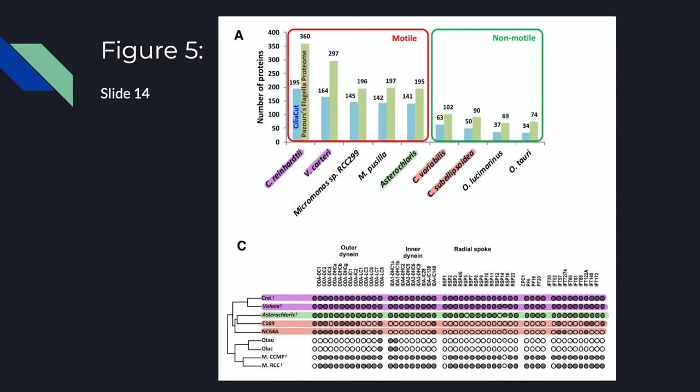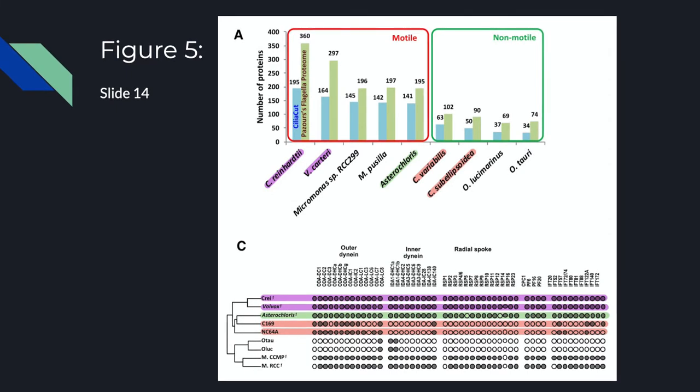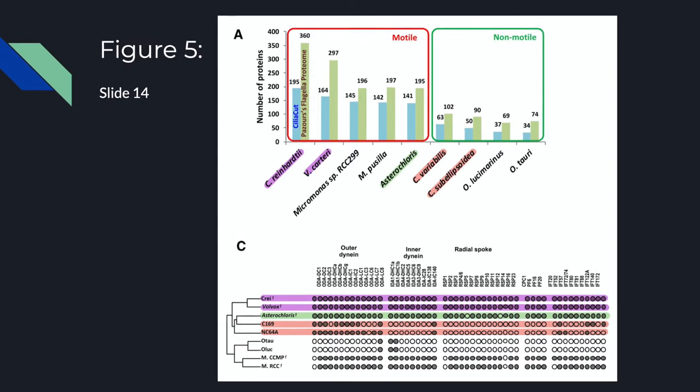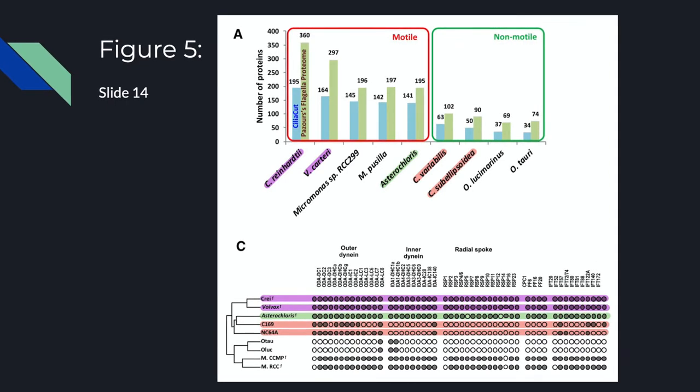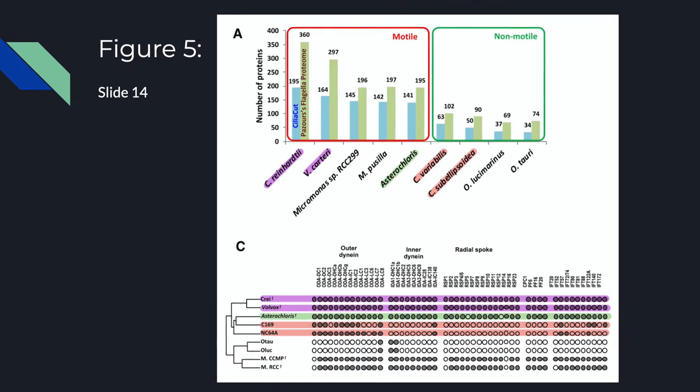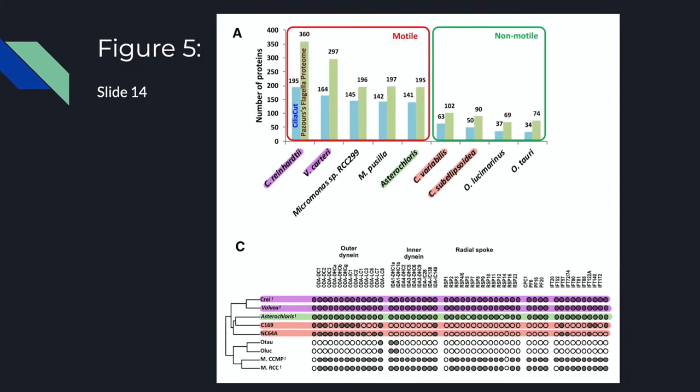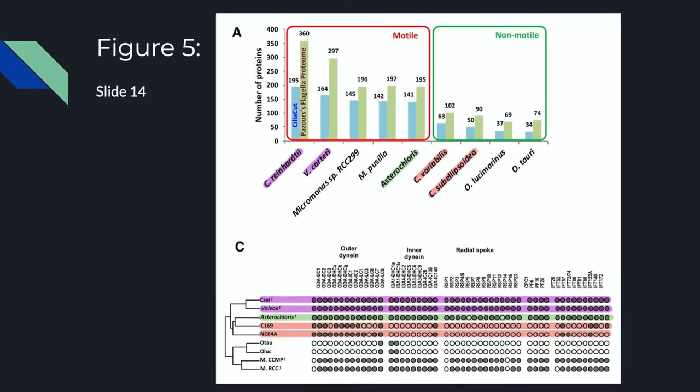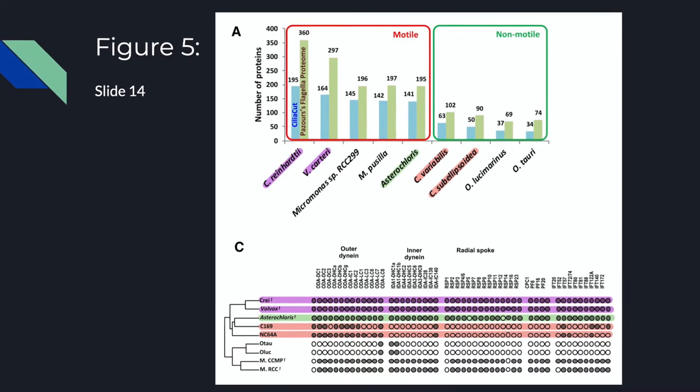Through this analysis it was shown that the induced better defined algal genes showed an increase in the expression of flagellar genes. This is interesting because during lichenization Asterochloris is likely in a non-motile state and as such we would expect to not find any flagellar genes being expressed at all.